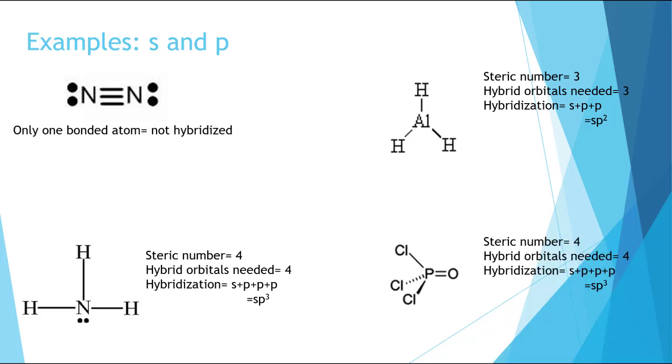For the next one, even though there's five bonds, remember a double and a triple bond still only get one spot. The other bond is not involved with the hybridization. So, since each one only counts as one, each bonded atom only counts as one, the steric number is four. This means that we need four hybrid orbitals, and so we get SP3.